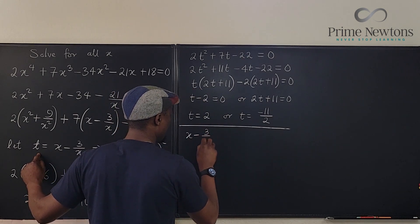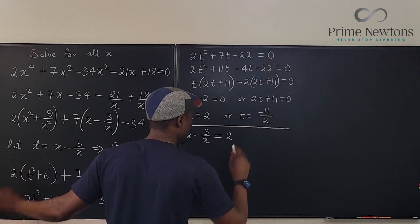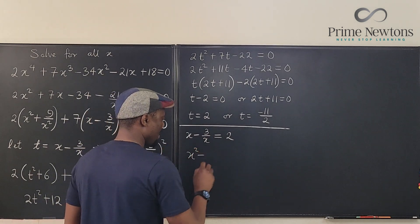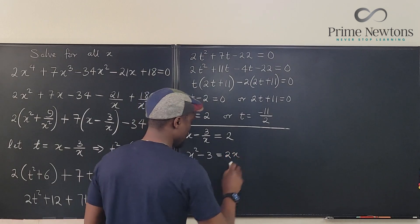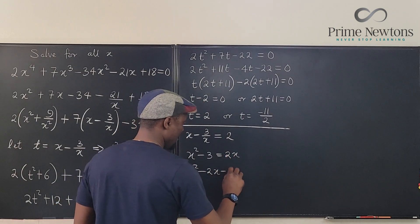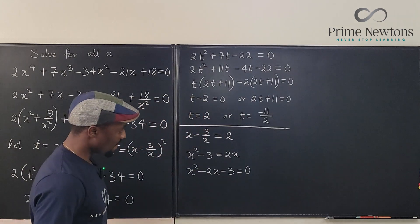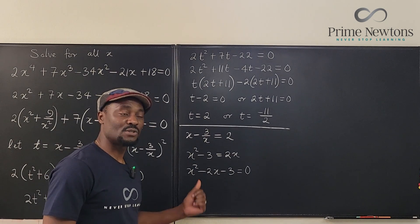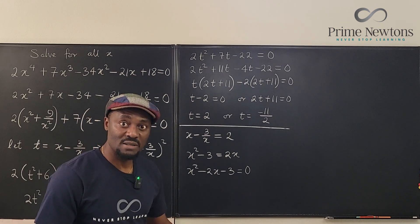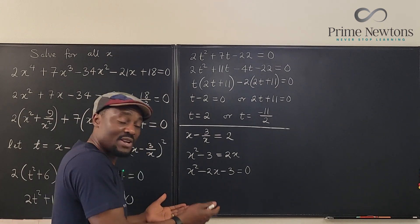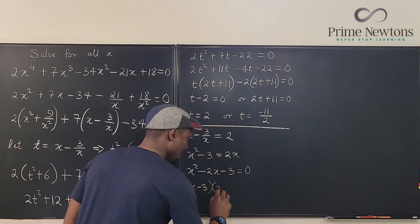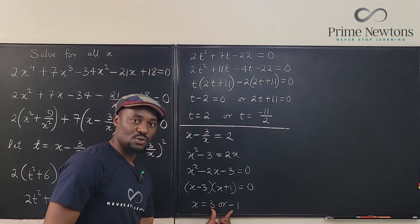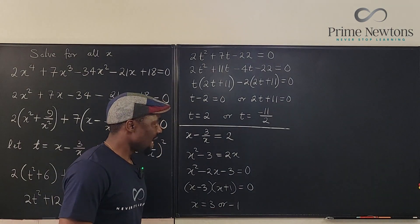Let's draw a line here. So we say that x minus 3 over x is equal to t. Let's call it 2. So now you're going to generate a quadratic equation here. You multiply everywhere by x. That tells you that x² minus 3 equals 2x. So that x² minus 2x minus 3 is equal to zero. Now this is a very easy quadratic. What two numbers will you multiply to get minus 3, and their sum is minus 2? It has to be minus 3 times 1. So x minus 3, x plus 1 equals 0 means that x equals 3 or negative 1. So these are the two possible values of x.